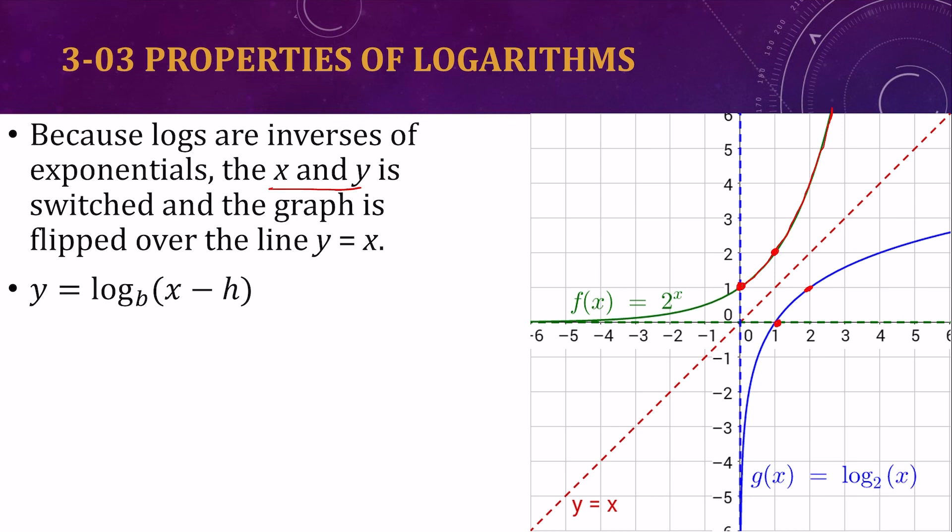So if we have y equals log base b of x minus h, all the x and y stuff from the exponentials has switched. So the domain is the same as the range from the exponentials. The range of the exponential is y is greater than k. So the domain is x is greater than h.